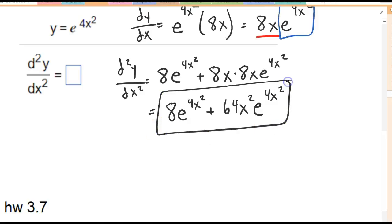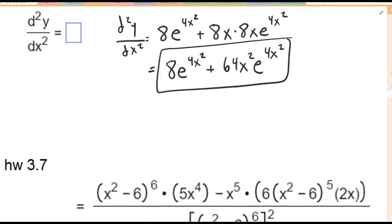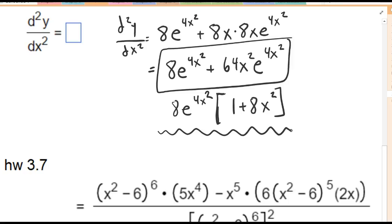Many different ways you can enter this. For what's coming up, it's going to be more likely you're going to pull out an 8e to the 4x squared, and you're going to be left with a 1 plus 8x squared. The reason why this comes in handy later on is eventually you're going to be setting the derivatives equal to 0 and solving for when that becomes true, and this is never 0, so you're going to focus on when this is 0.